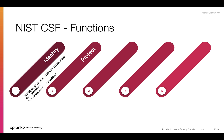Then we figure out how to protect these assets. Sample outcomes of this function include protections for identity management and access control, including physical and remote access, or managing protective technology. Authentication policies, firewalls, antivirus software, data loss prevention solutions, email and web security gateways, and many more technologies would be implemented or strengthened as part of this function. This also includes empowering staff through awareness and training to prevent potential issues related to user error.